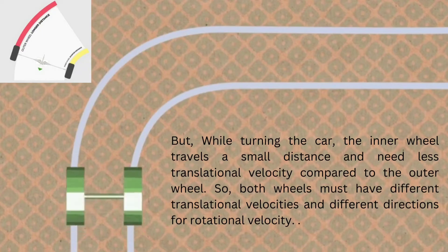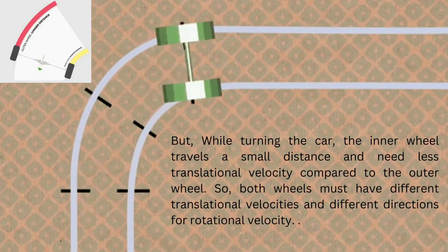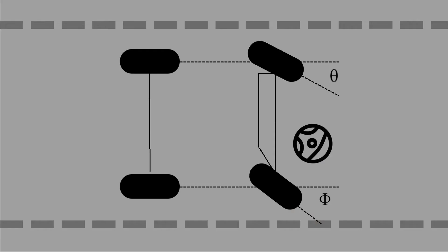But while turning the car, the inner wheel travels a small distance and needs less translational velocity compared to the outer wheel. So both wheels must have different translational velocities and different directions for rotational velocity. This difficulty can be overcome by having different steering angles for two front wheels.